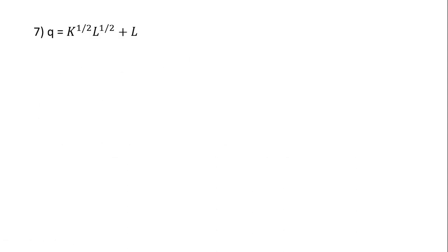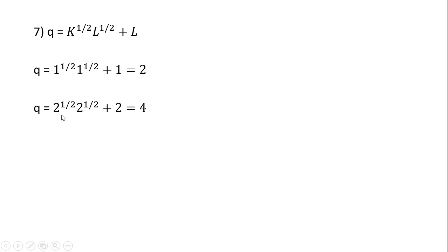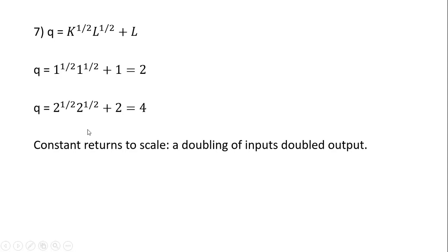Example 7: using 1 for K and 1 for L, we get 2 units of output. Doubling our inputs, output exactly doubles — so we have constant returns to scale. That's all the examples. I hope you found this video helpful.